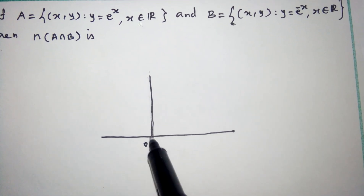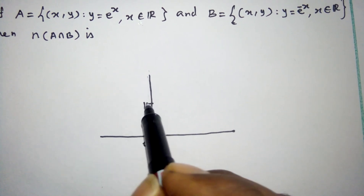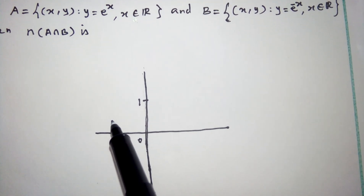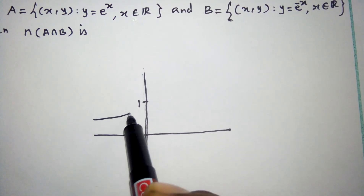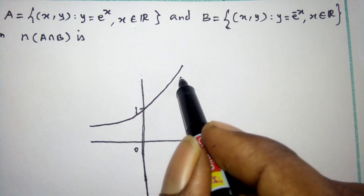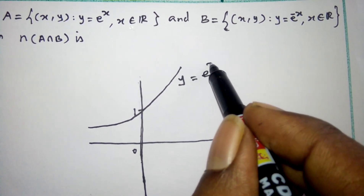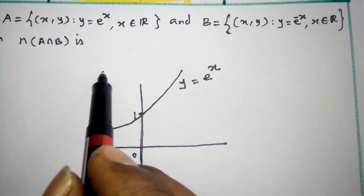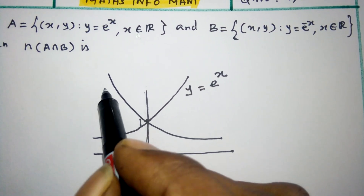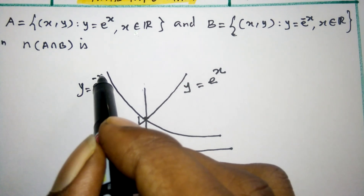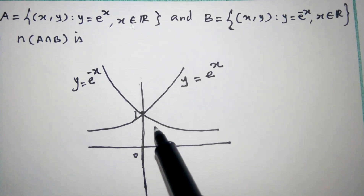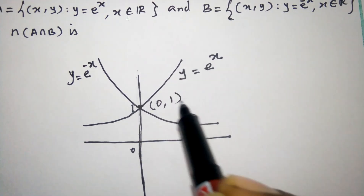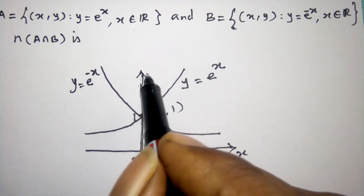So now we have to draw the graph for y equals e power x and y equals e power minus x. The point is (0, 1). The curve for y equals e power x is this curve, and the curve for y equals e power minus x is this curve. These two curves intersect at only one point: (0, 1), that is x and y.